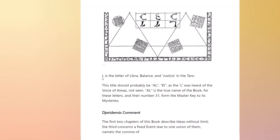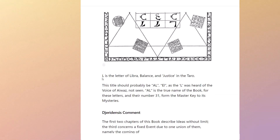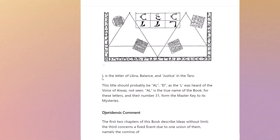He sort of slightly prevaricates — this title should probably be Al, as the L was heard in the voice of Ayros, not seen. So Al is the true name of the book, for these letters and their number 31 form the master key to his mysteries. The key to the mysteries is basically one of the Eliphas Levi books. So you can see there's some kind of referencing backwards to things.